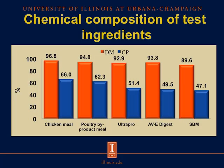In this slide, we can see the chemical composition of each of the test ingredients. We have on the y-axis the concentration in percentage, and on the x-axis each of the test ingredients: chicken meal, poultry by-product meal, ultra-pro, ABE digest, and soybean meal. The orange bar represents dry matter and the blue bar represents crude protein. Dry matter is quite similar across all test ingredients, but crude protein is relatively high in the animal protein sources — chicken meal, poultry by-product meal, ultra-pro, and ABE digest — compared with soybean meal.